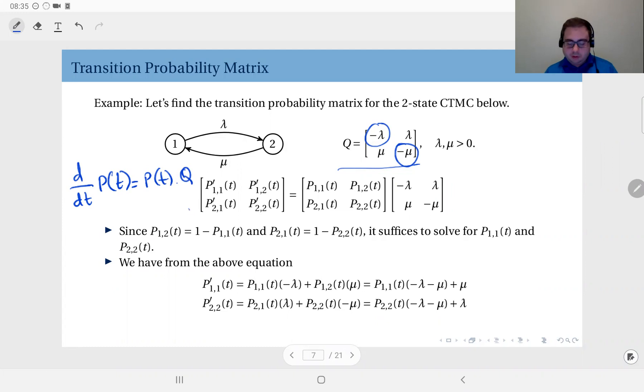So here you see the derivative of the state transition probability matrix, four components, and on the right hand side we have the state transition probability matrix times the infinitesimal generator.